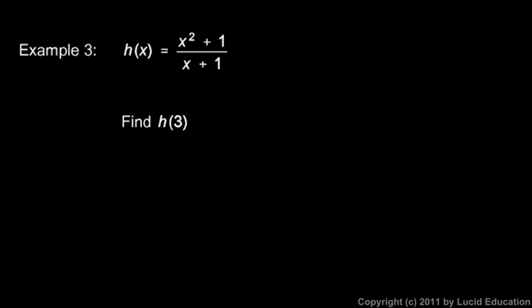One more example. Function h here, and it's a function of x. h of x is equal to x squared plus 1 over x plus 1. And we're told to find h of 3. So h of 3 would just equal this expression with the 3 plugged in for x here and here. So this would be 3 squared plus 1 over 3 plus 1.